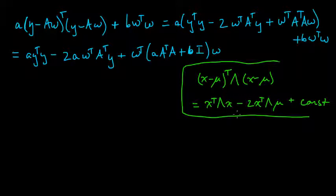We want to sort of factor this to get w minus some mean, and then get the covariance matrix. So what we're going to do is match up terms here. So we're going to look for the part which has like a w transpose times something times w, and that's this part. So let's let lambda equal this thing, little a times A transpose A plus little b times i.